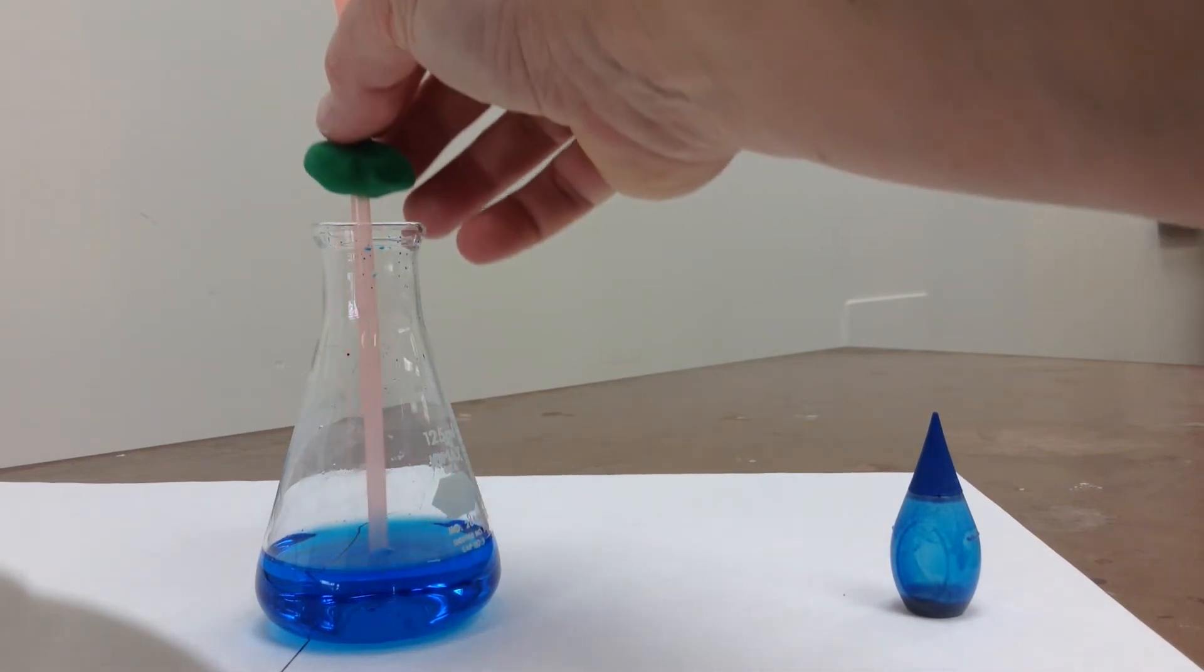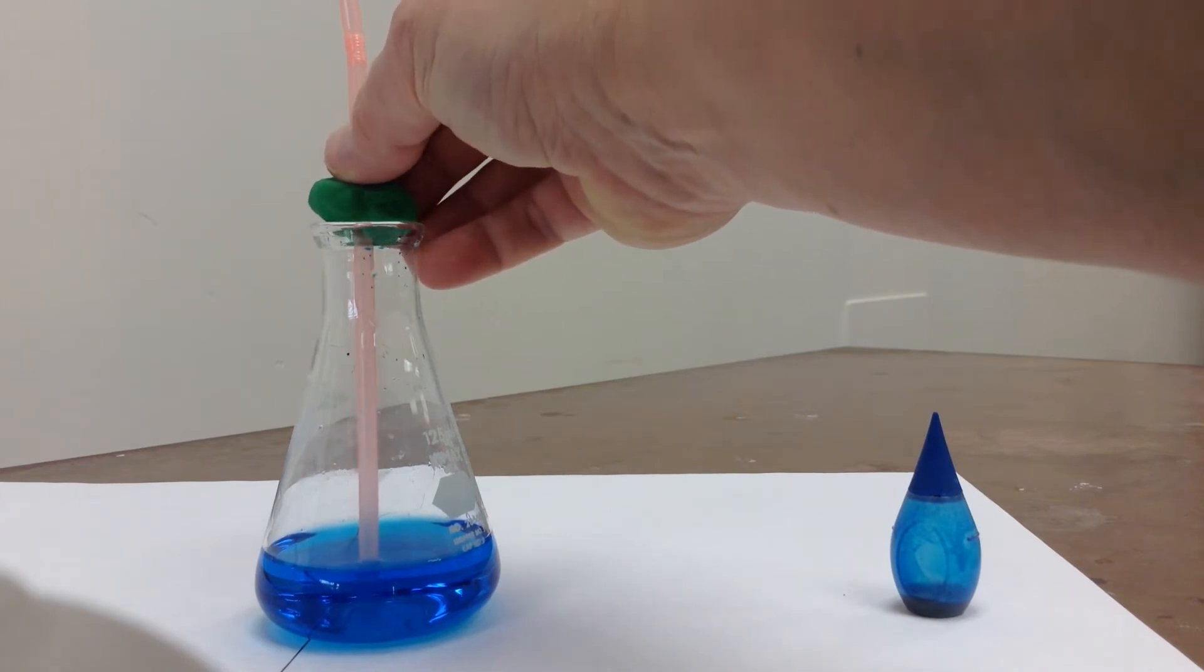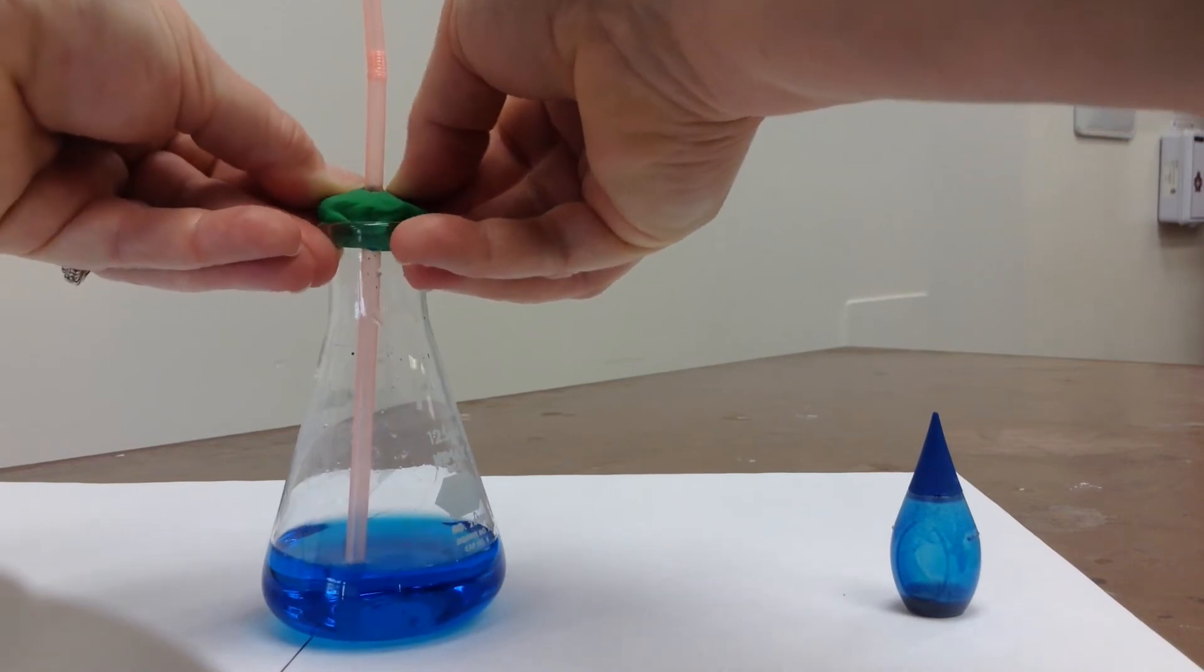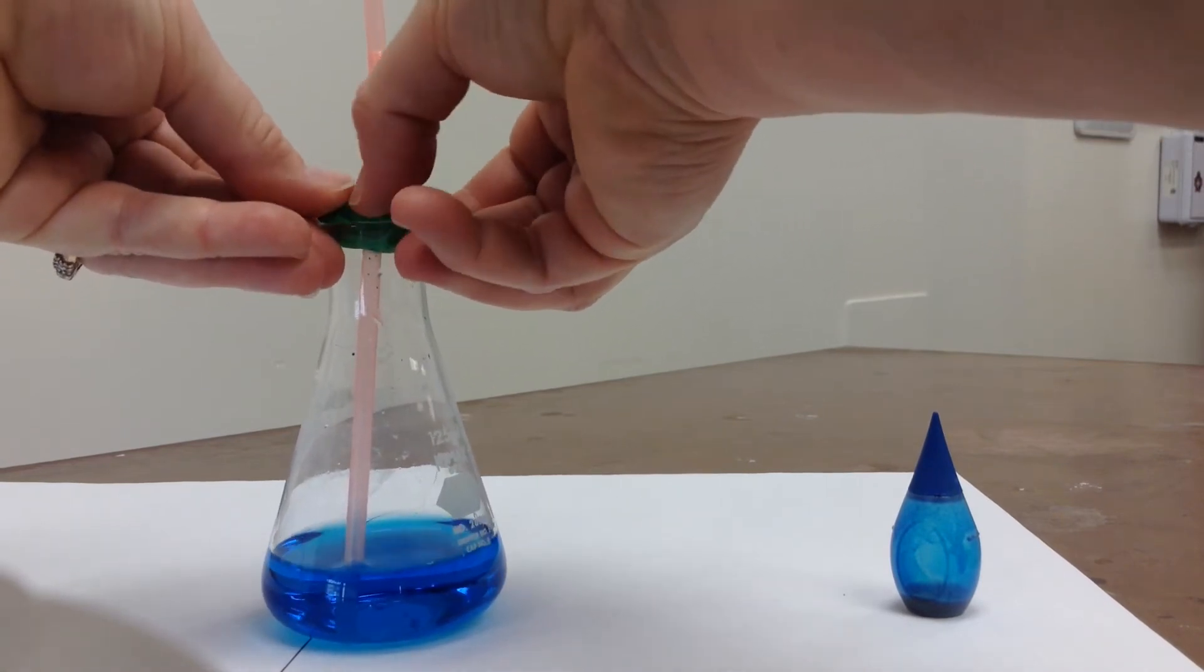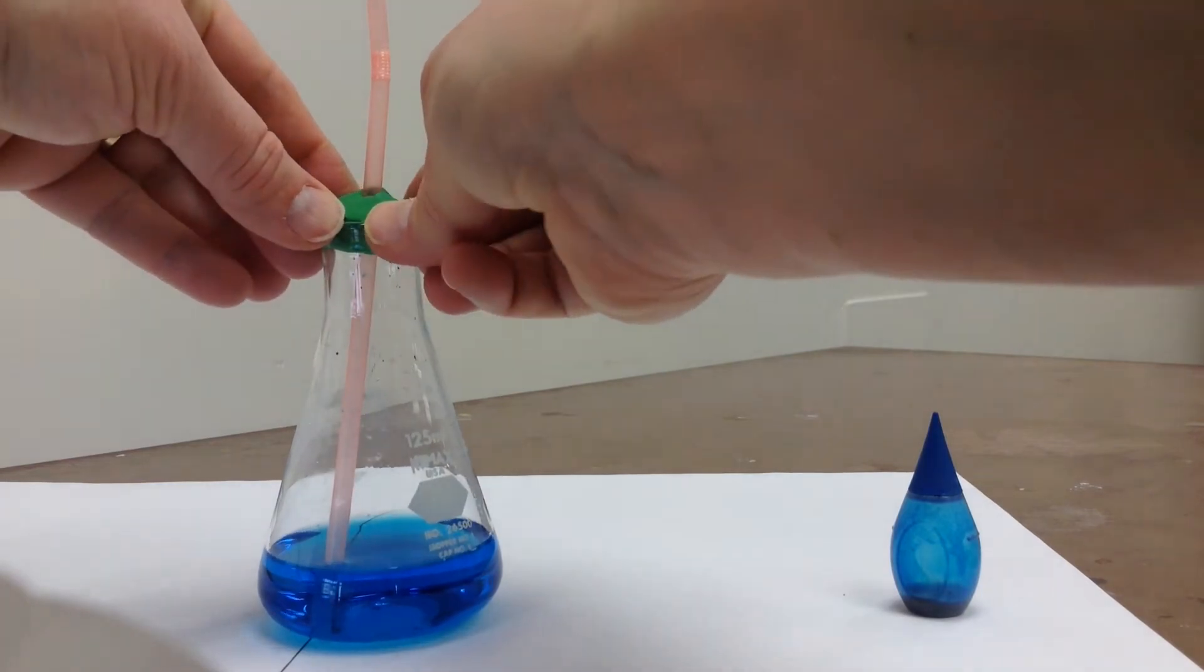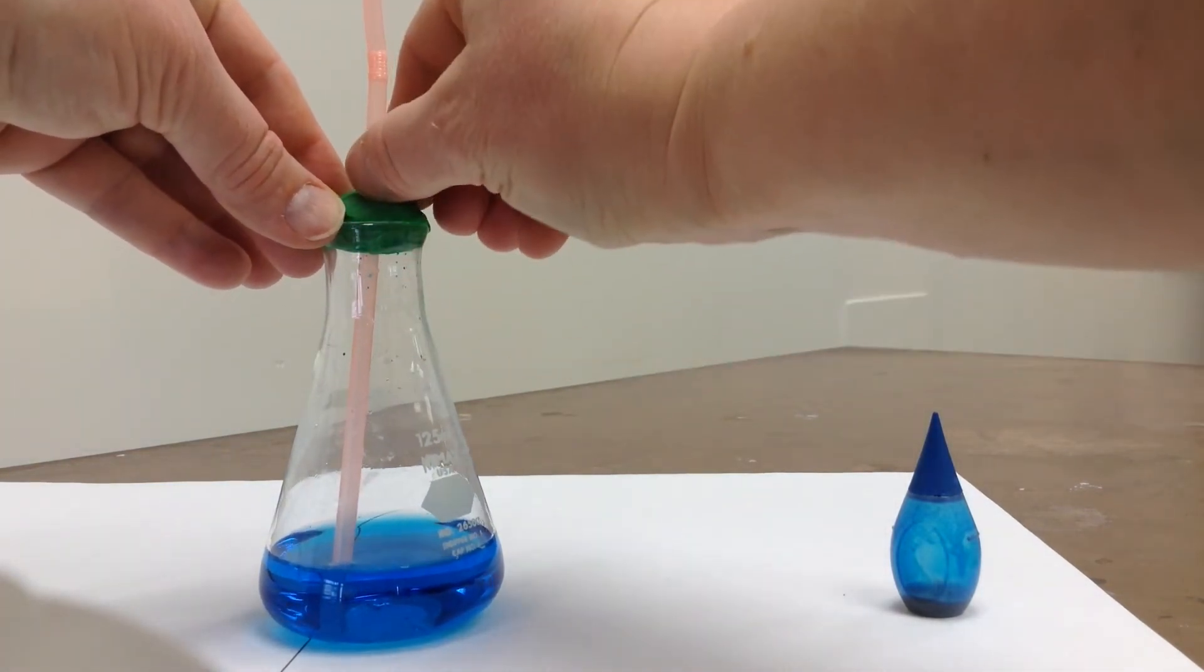So we put our straw in, it's in the liquid but not touching the bottom, and we mold our clay around the top of the flask. Try not to push it in, because then it's hard to get out again. So we've made an airtight seal.